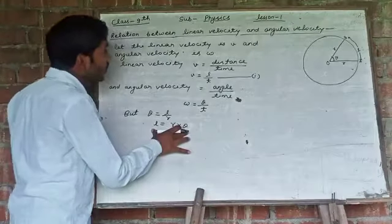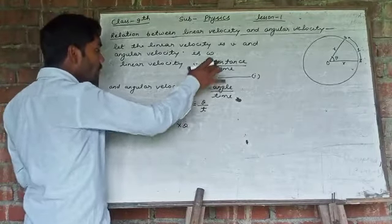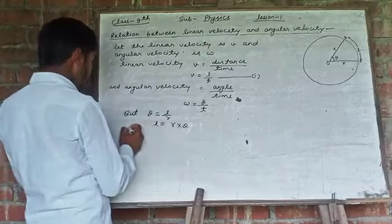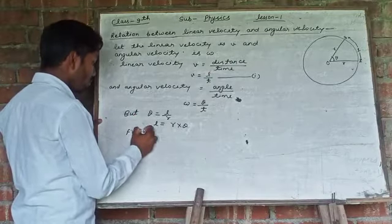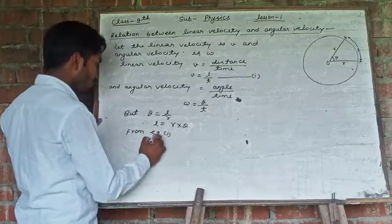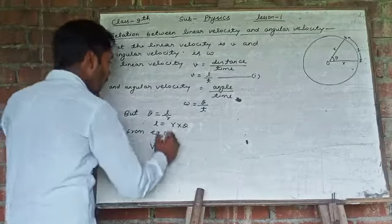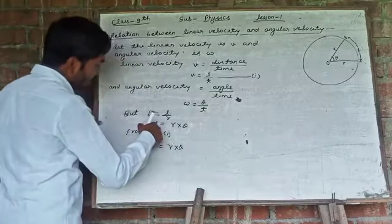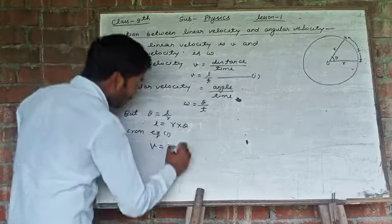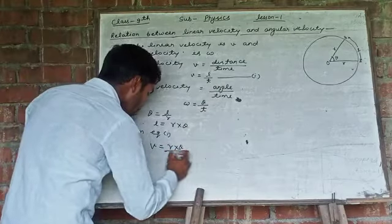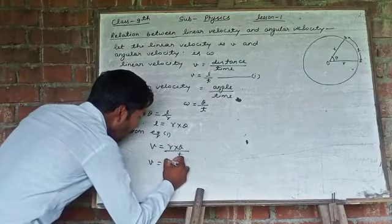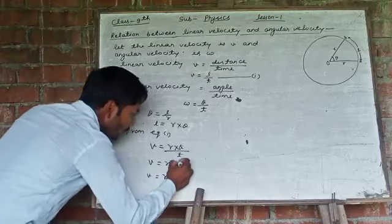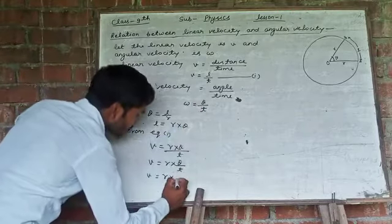Now we will put this value in equation number 1. So from equation 1, V is equal to R into theta, because L is equal to R into theta, so L is here R into theta upon this one T. So V is equal to R into this one theta upon T. And V is equal to R into theta upon T. We know that this is omega.